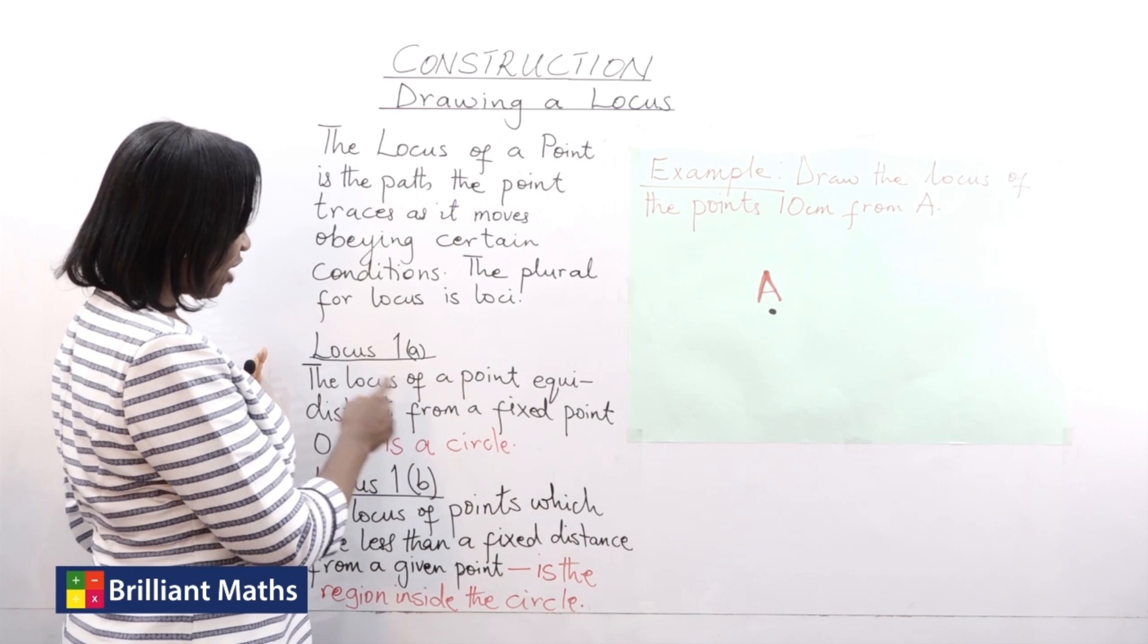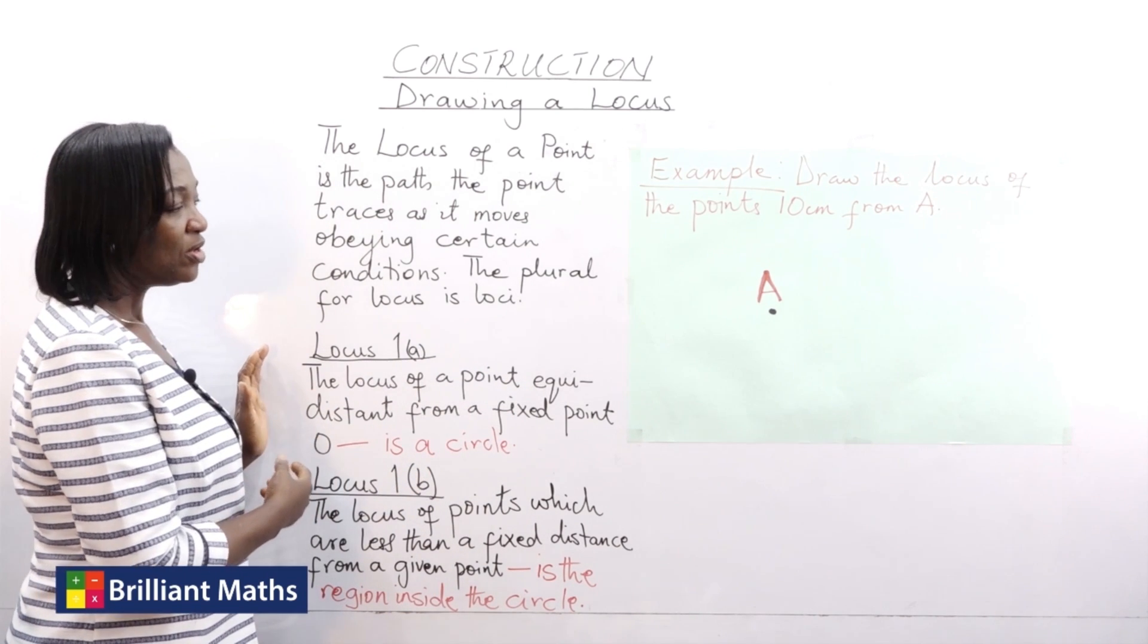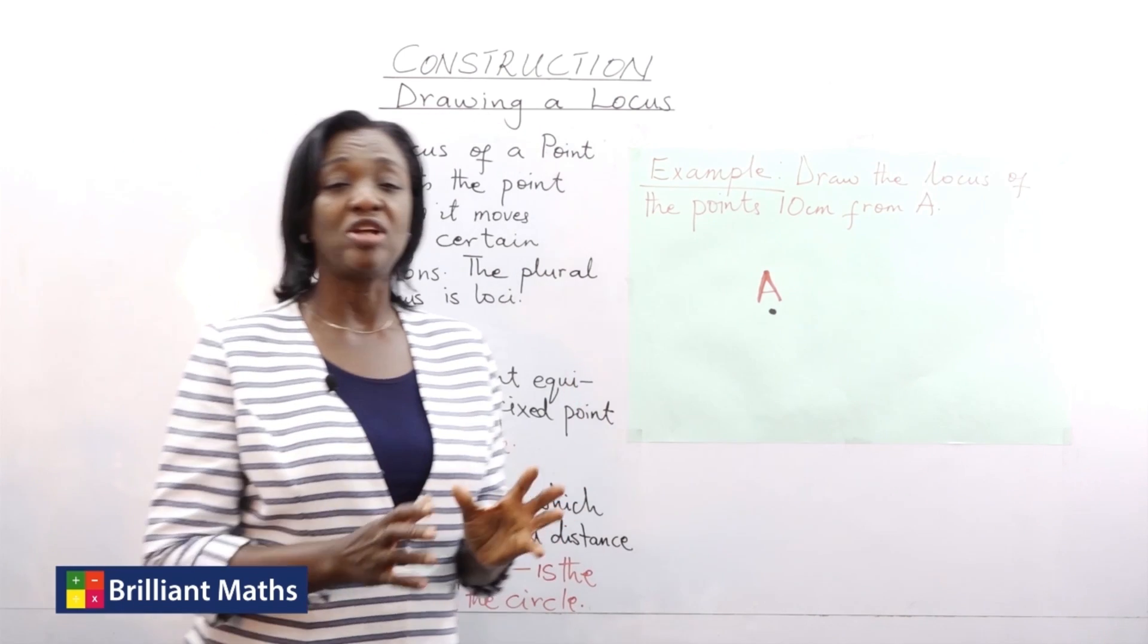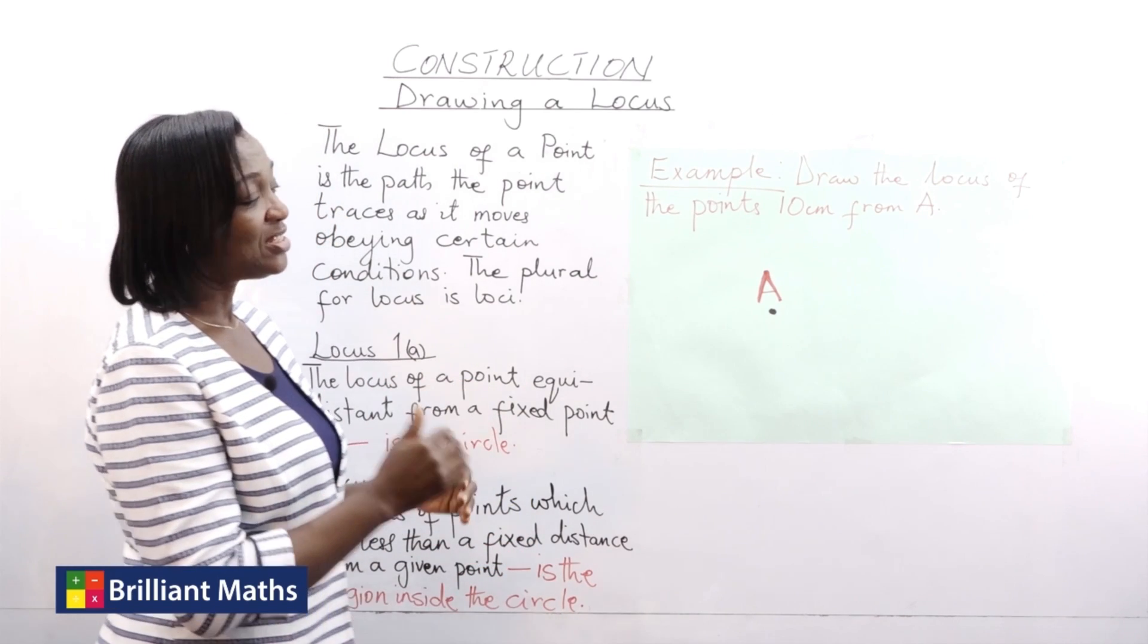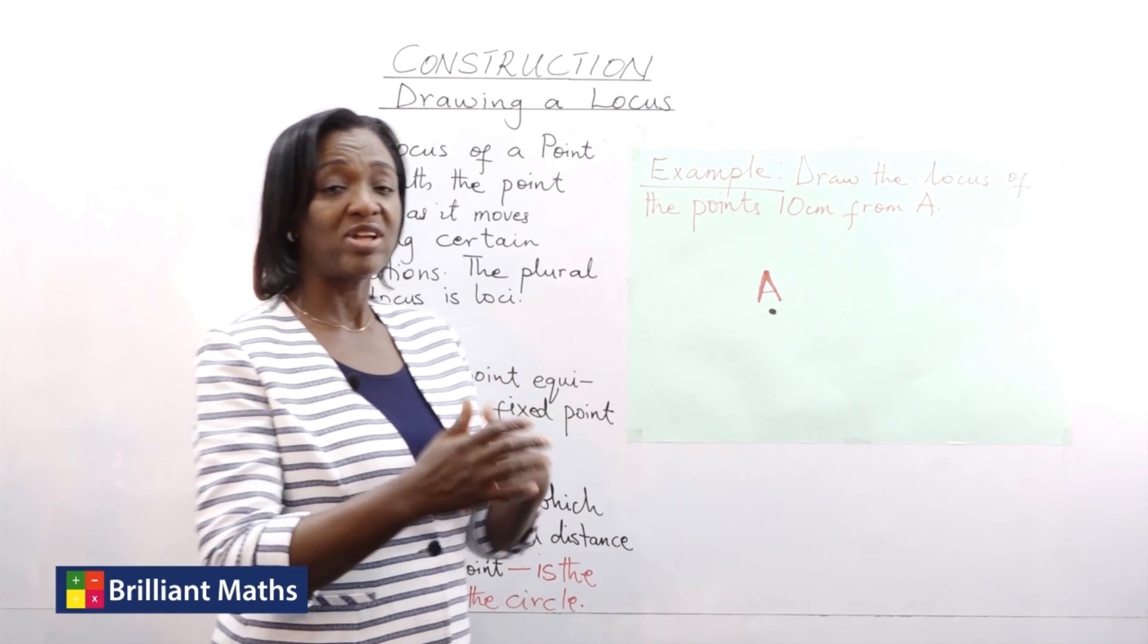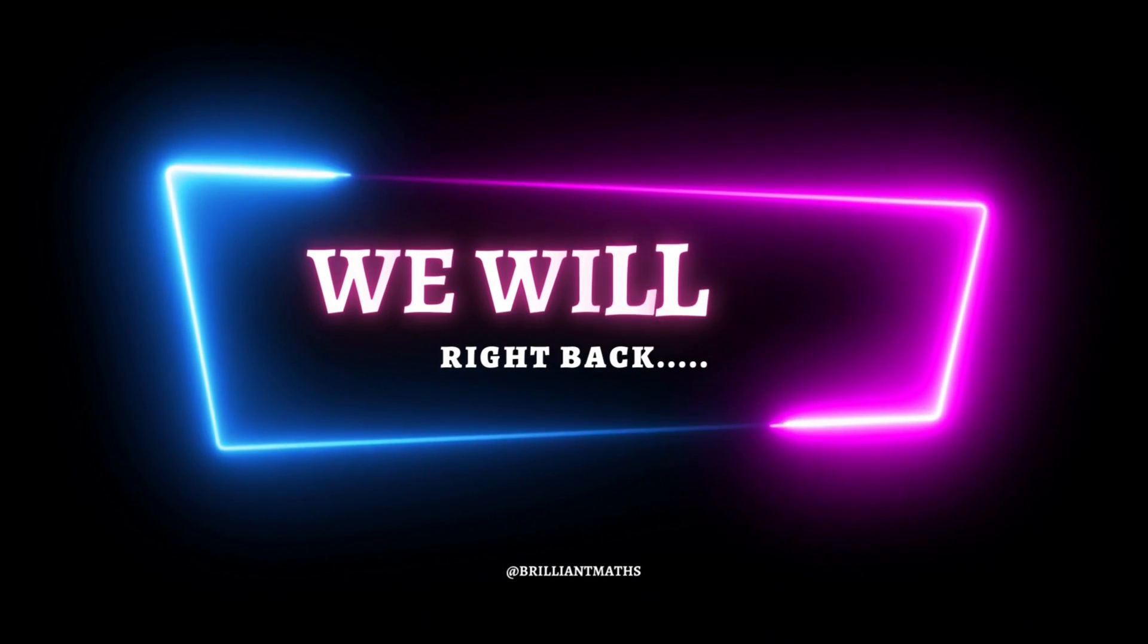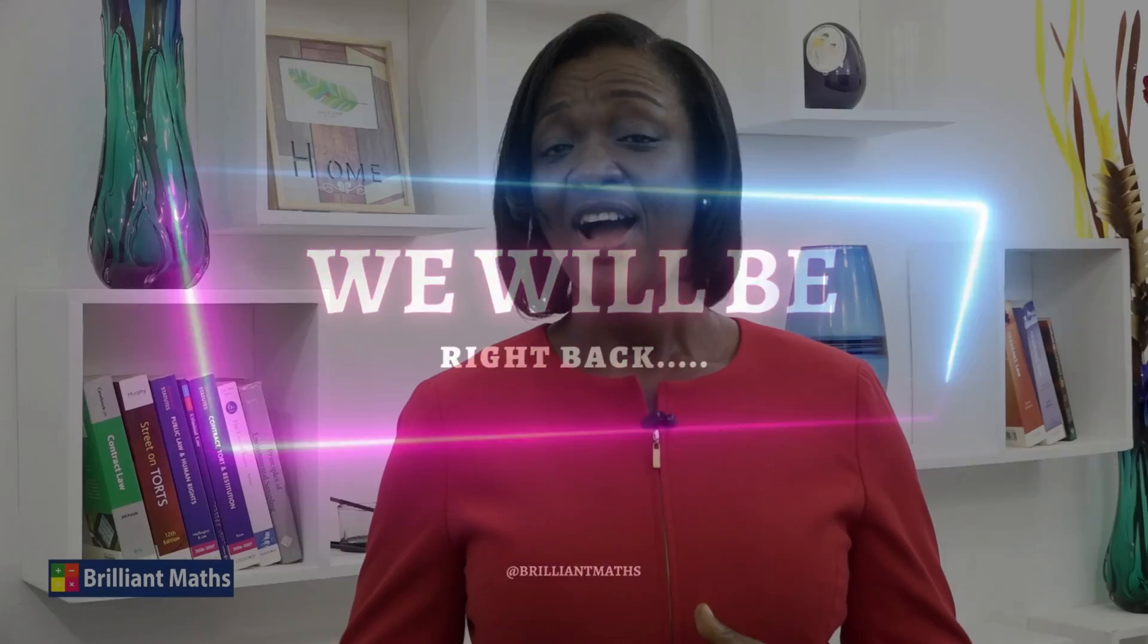The locus of a point is equidistant from a fixed point O. So assuming we have a fixed point, and we are told to draw the locus of the points equidistant, meaning equal distance, points that are of equal distance from that given point.